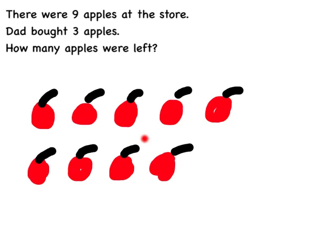I have five, six, seven, eight, nine. That takes care of this part of the story problem. Now it says that dad bought three. We talked about buying means to take away from the store.